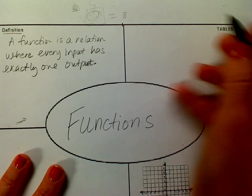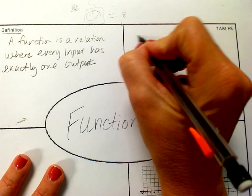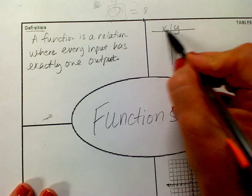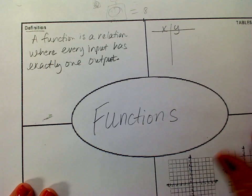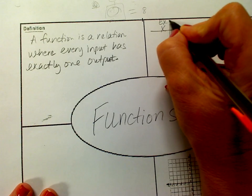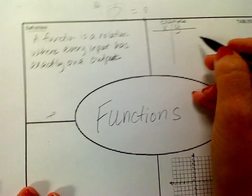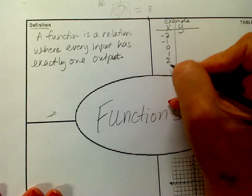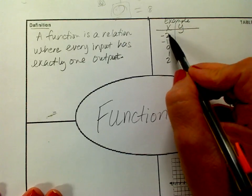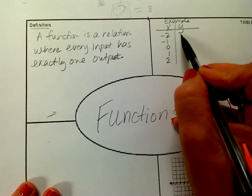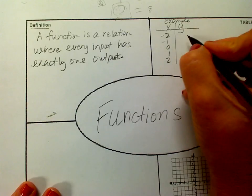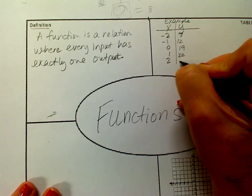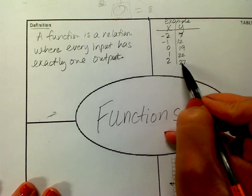So for a table, we're going to use an input-output table. In our input-output table, in math — in Algebra 1 and beyond — you're probably going to use x and y a lot more, because it'll be graphing onto a coordinate plane. Here's an example of a function table. I'm just making up some numbers for x, and then making up numbers for y. Don't feel like you have to find the rule yet. I'm making sure that every input has exactly one output.